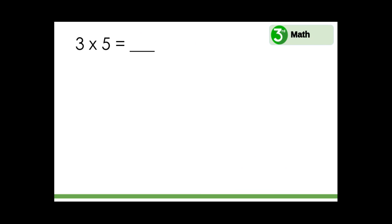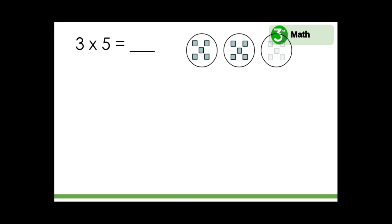What about three times five? We can use loops and groups as a model. Three loops with five ones in each loop — this is five, ten, fifteen ones.